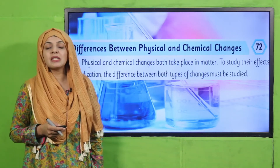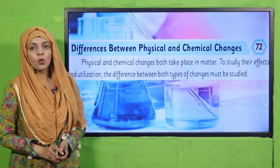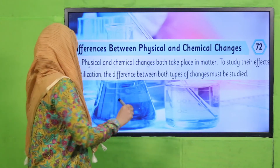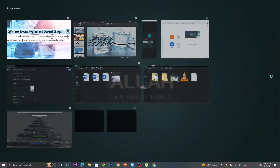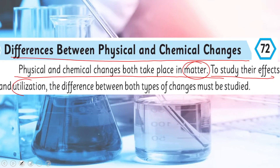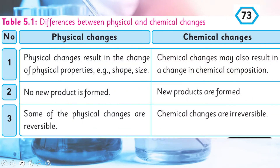Quickly open page number 72 in your Science 5 books. Let's start the reading: 'Difference between Physical and Chemical Changes. Physical and chemical changes both take place in matter. To study their effects and utilize them, the difference between both types of changes must be studied.' Physical aur chemical change jo hai, wo matter ke andar dono hote hain, aur inke effects ko samajhne ke liye hume dono ko study karna padega.